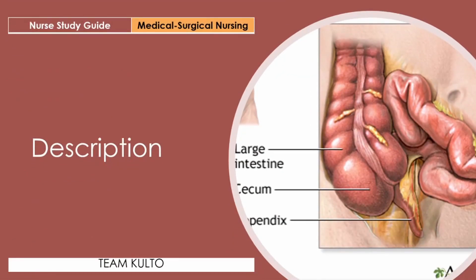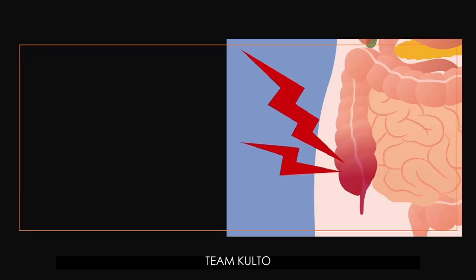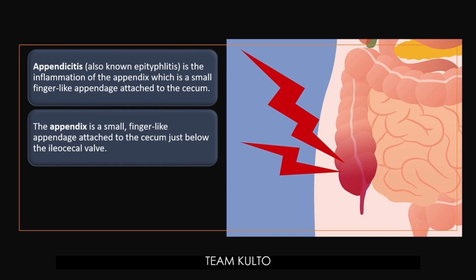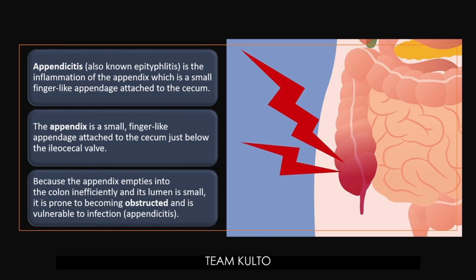We're going to start our discussion with description. What is appendicitis? When you see the suffix '-itis' in a term, that means there is inflammation. So, appendicitis — also known as epityphlitis — is the inflammation of the appendix, which is a small finger-like appendage attached to the cecum, just below the ileocecal valve. Because the appendix empties into the colon inefficiently and its lumen is small, it is prone to becoming obstructed and is vulnerable to infection.